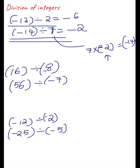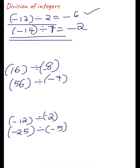From these answers you will understand one thing: whenever we divide a negative integer by a positive integer, we will get the answer as a negative integer. What you should do is first divide them as whole numbers and then put the negative sign before the quotient. That is, -12 ÷ 2 means divide 12 by 2 to get 6, then put the negative sign. Similarly for -14 ÷ 7, divide 14 by 7 to get 2, then put the negative sign to get -2.